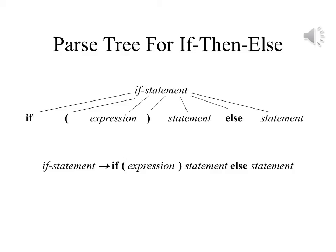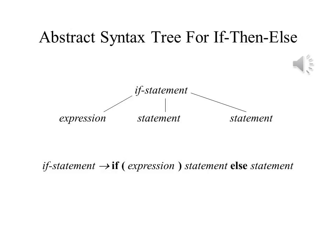This slide shows the syntax for an if-else statement. There are seven components: the token 'if', the token open parenthesis, the non-terminal expression, the token close parenthesis, the non-terminal statement, the token 'else', and another non-terminal statement. The parentheses are each a token themselves. The abstract syntax tree is much simpler. The root of this tree fragment is the non-terminal if-statement, and it has three children: the expression that represents the condition, the statement that is executed if the condition is true, and the statement that is executed if the condition is false.